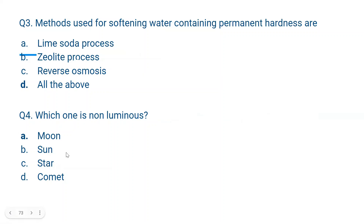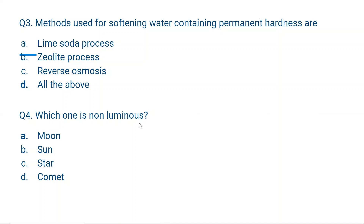Question number 3. Methods used for softening water containing permanent hardness are: A) lime soda process, B) zeolite process, C) reverse osmosis process, D) all of the above. Question number 4 relates to luminous bodies. A luminous body is one that burns itself and gives its own light. The moon does not burn itself and does not give its own light — it only reflects sunlight — so the moon is a non-luminous body. The sun, stars, and comets are luminous bodies.